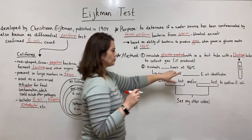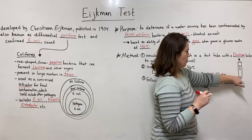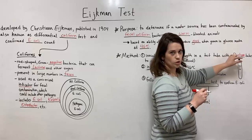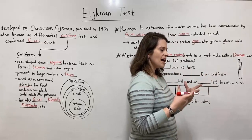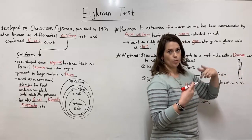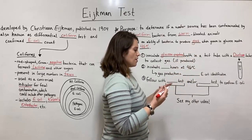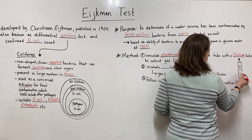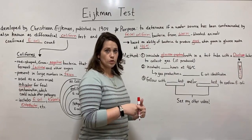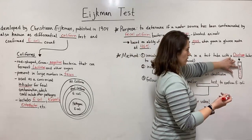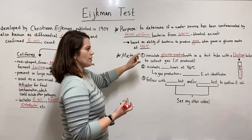The larger test tube has the glucose peptone broth, and the small Durham tube floats inside it. It starts at the bottom of the tube, but when the media is inoculated and bacteria produce gas, that gas creates bubbles. Some of those bubbles from the gas production will float into the Durham tube and cause it to rise up and float at the surface with gas trapped inside. This is why the Durham tube is so important — it collects the gas that you would not otherwise be able to see.